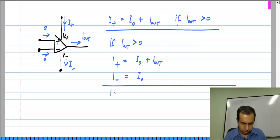And if Iout is smaller than zero, then I plus is just equal to I naught, and I minus will be I naught minus Iout.